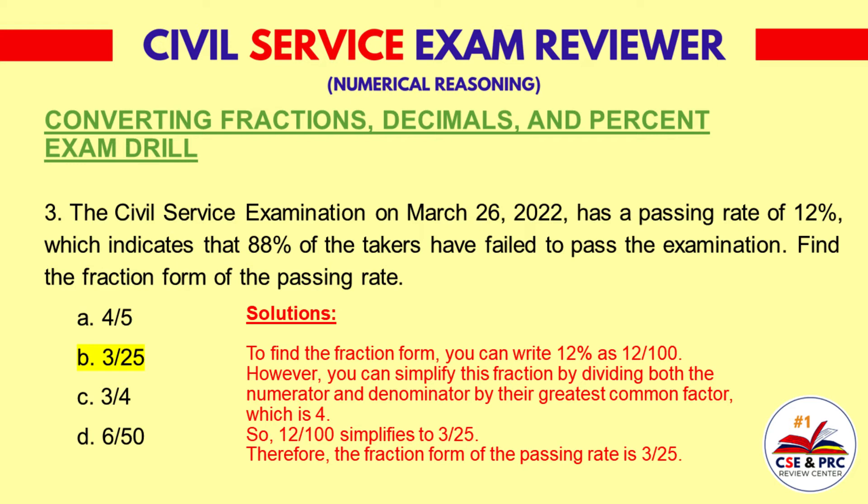Solutions: To find the fraction form, you can write 12% as 12 over 100. However, you can simplify this fraction by dividing both the numerator and denominator by their greatest common factor, which is 4. So, 12 over 100 simplifies to 3 over 25. Therefore, the fraction form of the passing rate is 3 over 25.